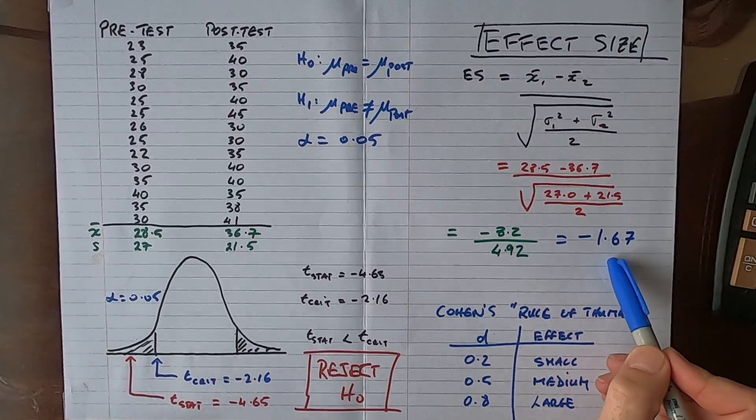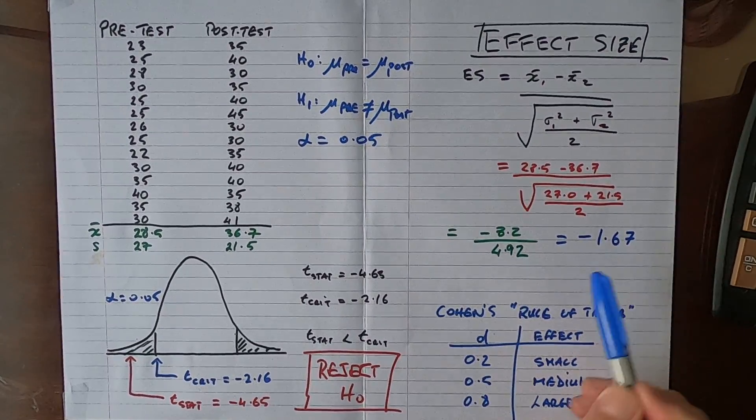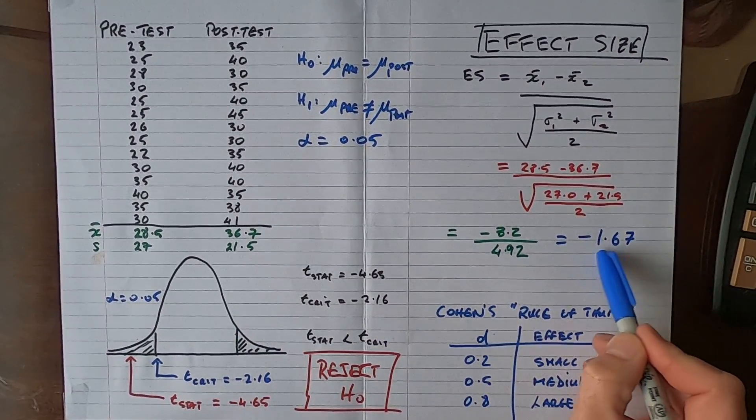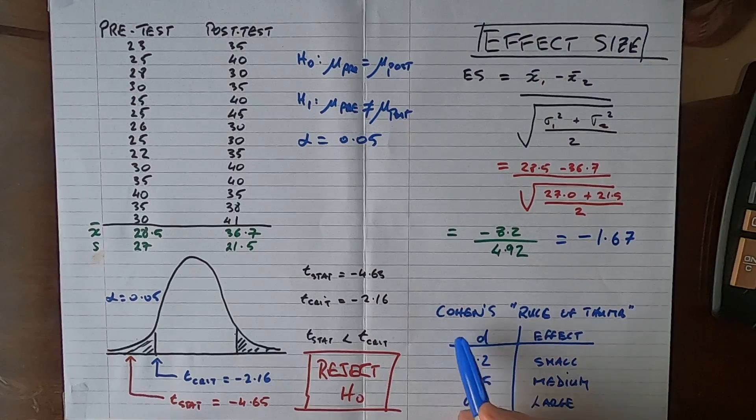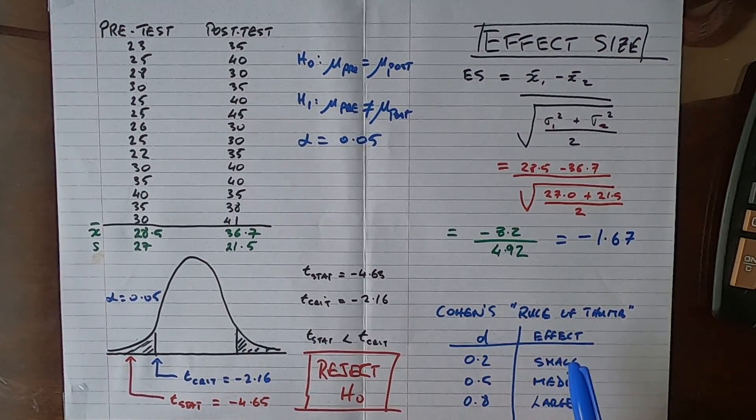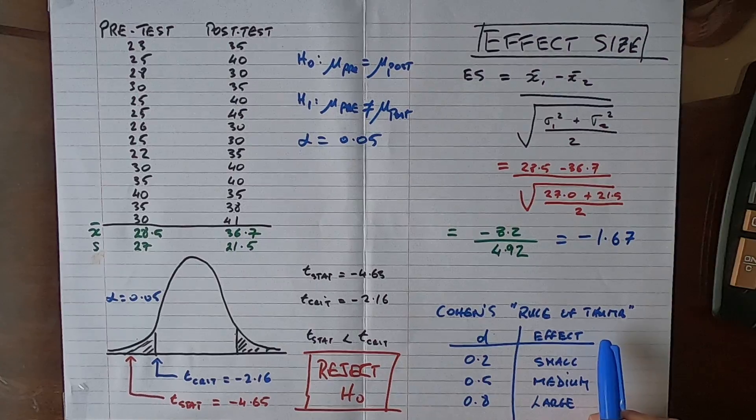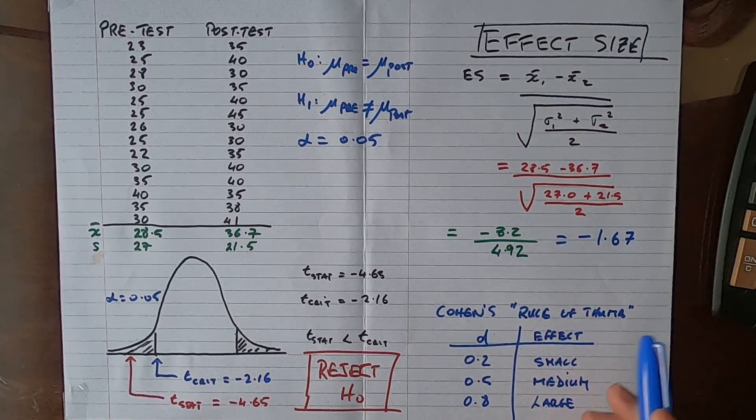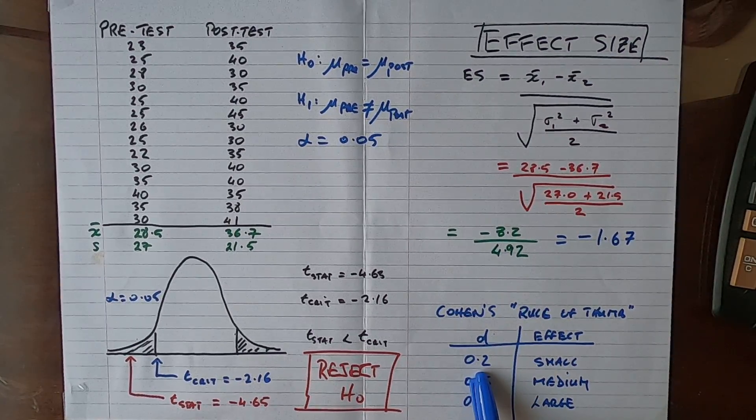So this is the size of the effect that we found. Now how do we interpret this number? The effect size was invented by a statistician called Jacob Cohen, and he came up with a rule of thumb for values for effect size.